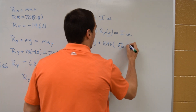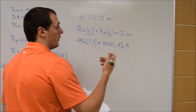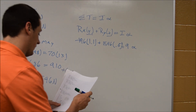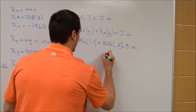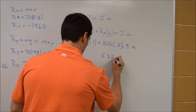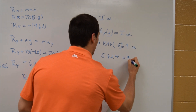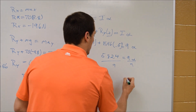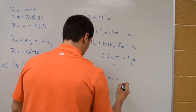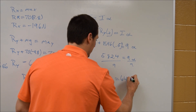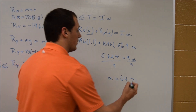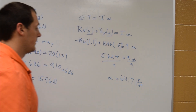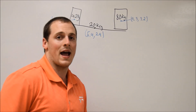The 9 is the moment of inertia given in the problem and also listed in the diagram. Doing the math: 582.4 equals 9 times alpha. Dividing both sides by 9, angular acceleration equals 64.71 radians per second squared.